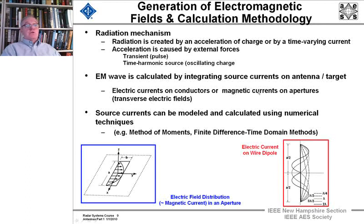So there's a backscattered electromagnetic wave from the induced currents on the target or on the aperture of the receiving antenna. Okay, now electric currents on conductors or magnetic currents on apertures give transverse electric fields. And these source currents can be modeled and calculated using basically the same techniques that we talked about—two examples being the method of moments and the finite difference time domain methods that we use to calculate cross-section. Those same methods can be used to calculate the electromagnetic fields from the source, either an electric current on a dipole or an electric field distribution, which would be a magnetic current in an aperture.